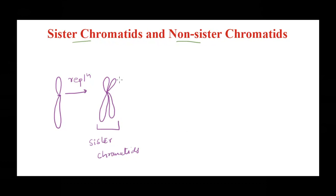They are called sister chromatids because all the genes — and to be very specific, all the alleles — are exactly the same, because it is an identical copy. So all the alleles of the genes are also the same. Now, in humans we are a diploid organism, meaning we have one set of chromosomes coming from the mother and one set coming from the father.